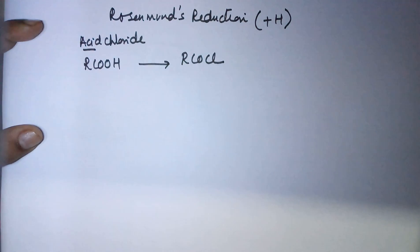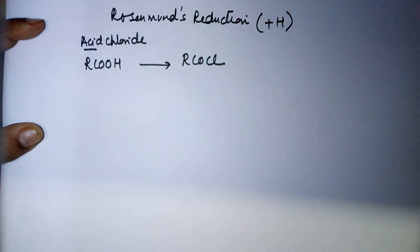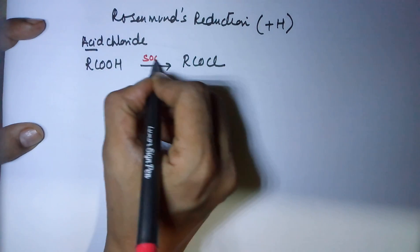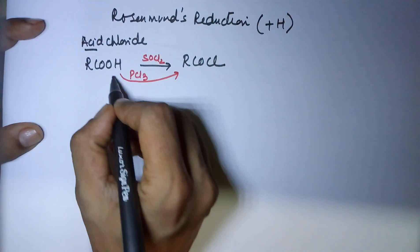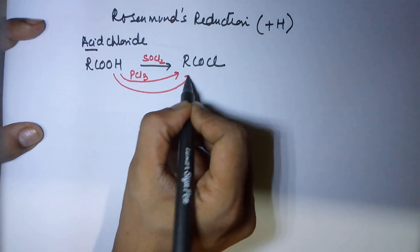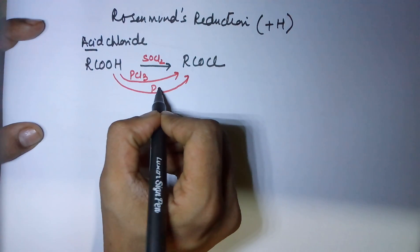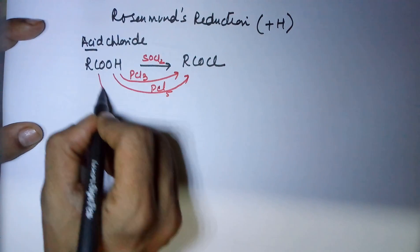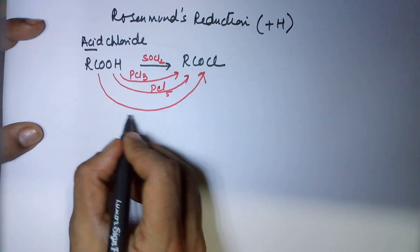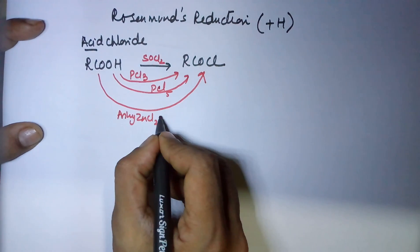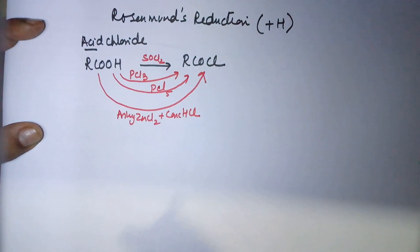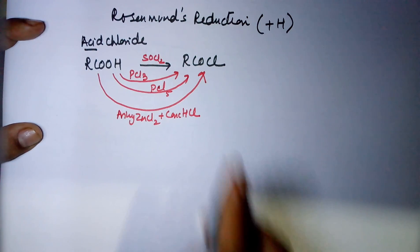You very well know there are reagents which can do this. For example, the best reagent is thionyl chloride. You can also use PCl3, PCl5, and you can also use the Lucas reagent which is anhydrous ZnCl2 plus concentrated HCl. That was just added information for you to understand what we mean by an acid chloride.